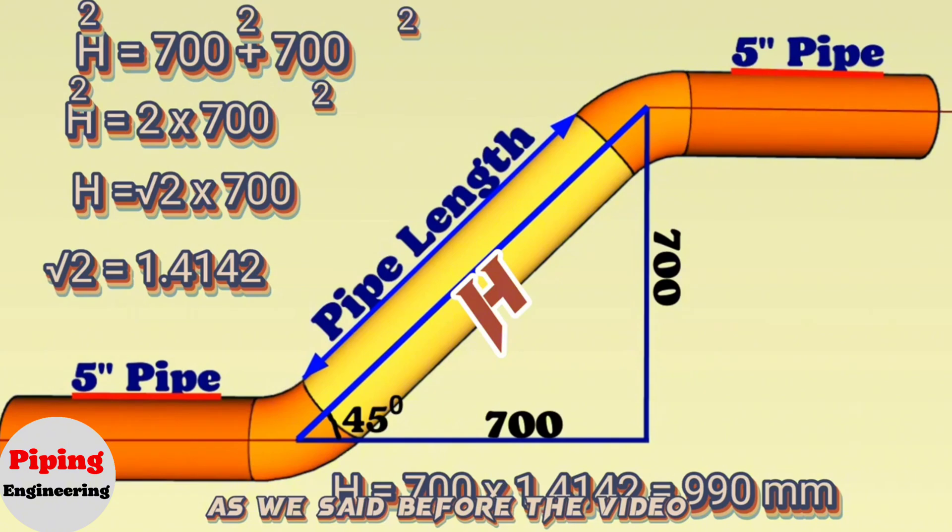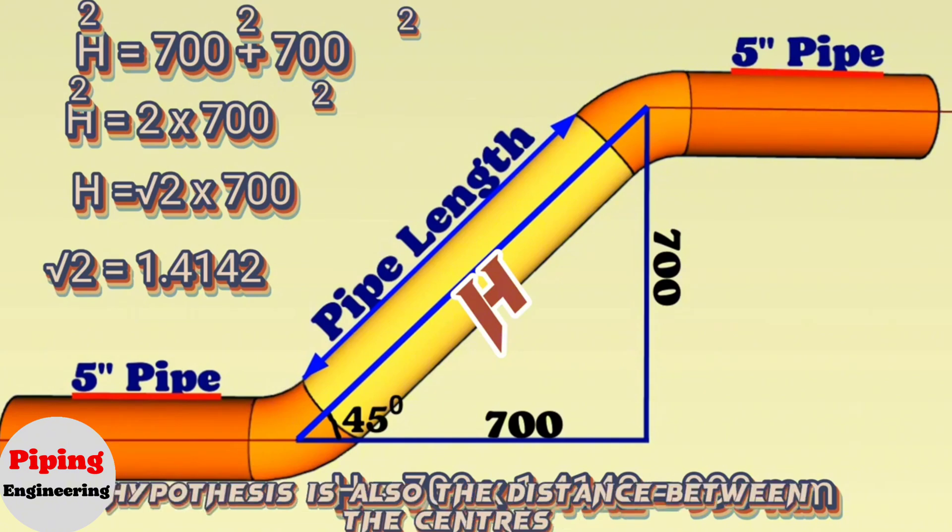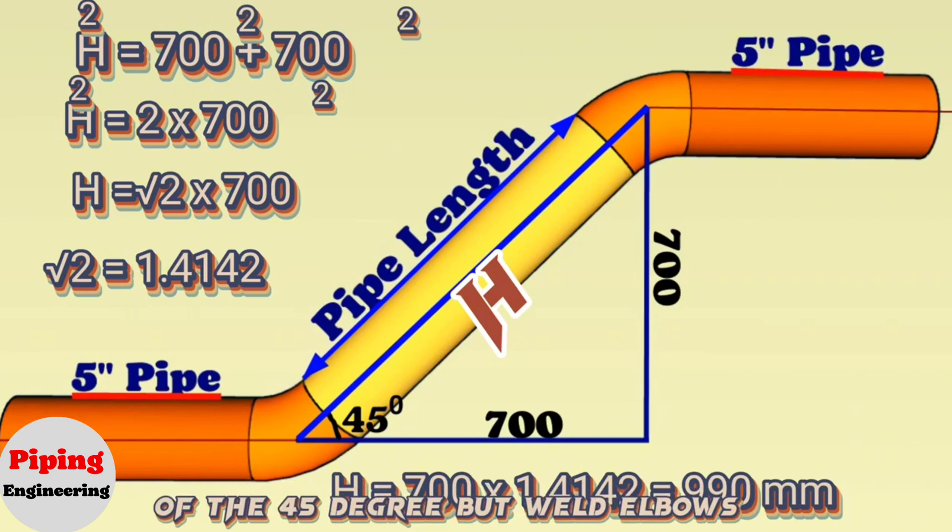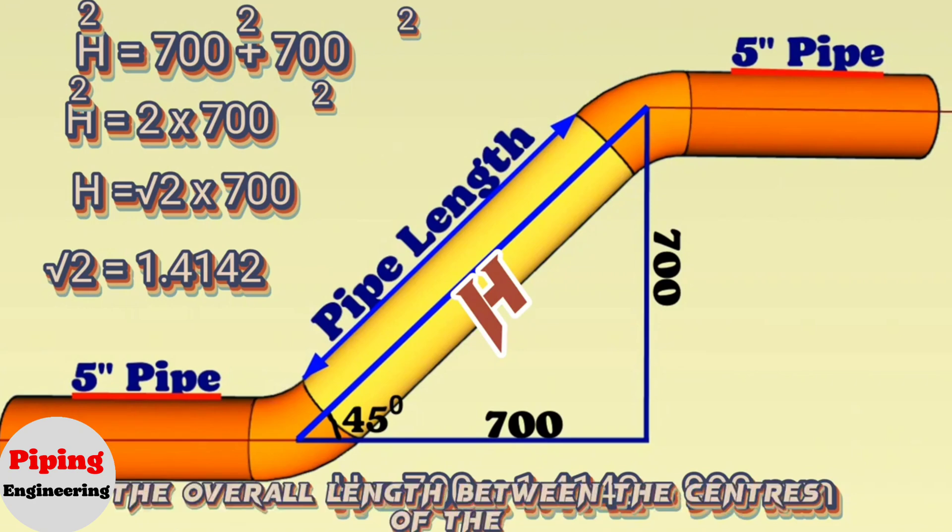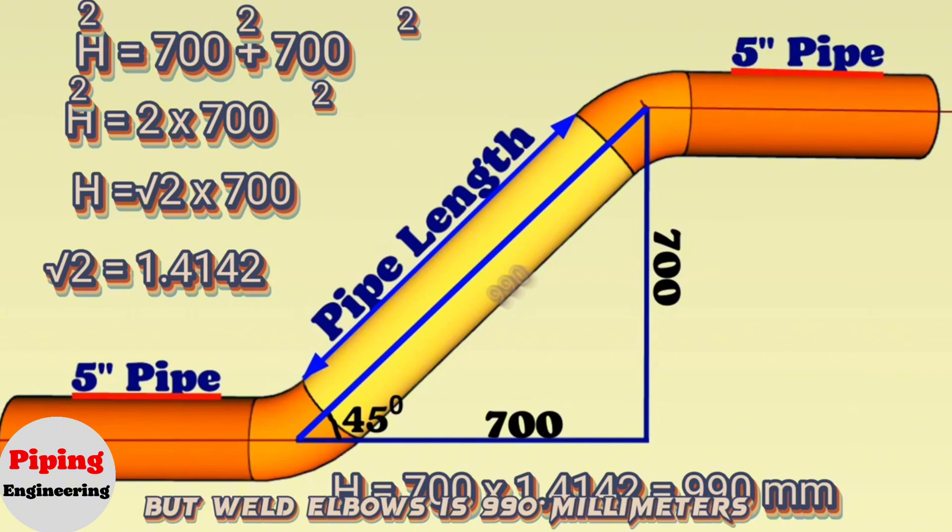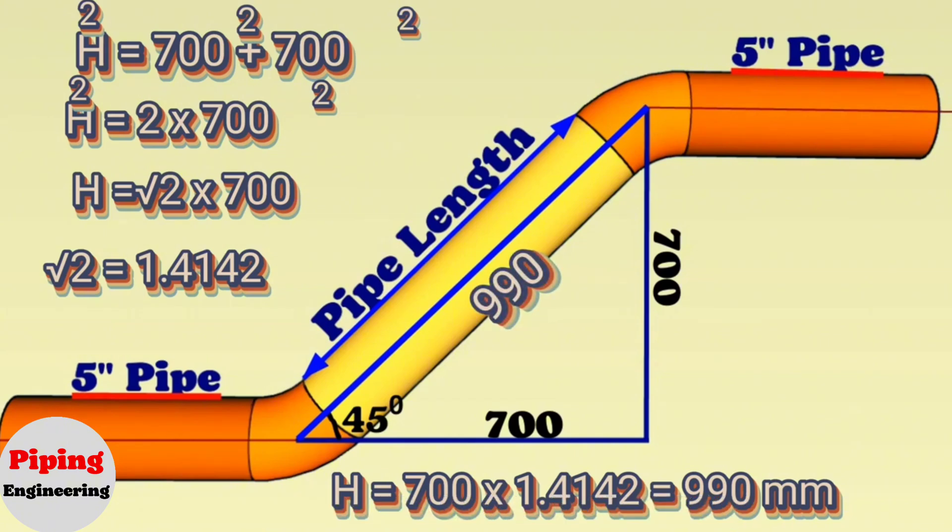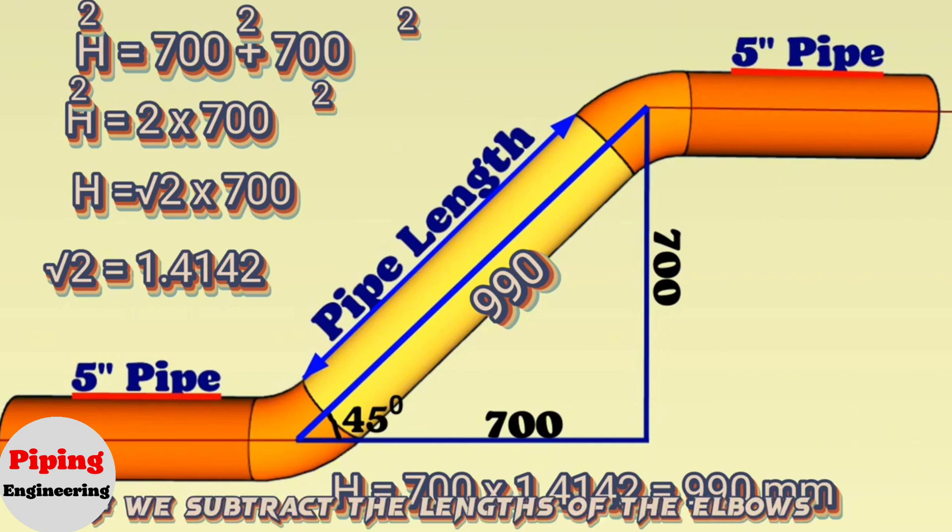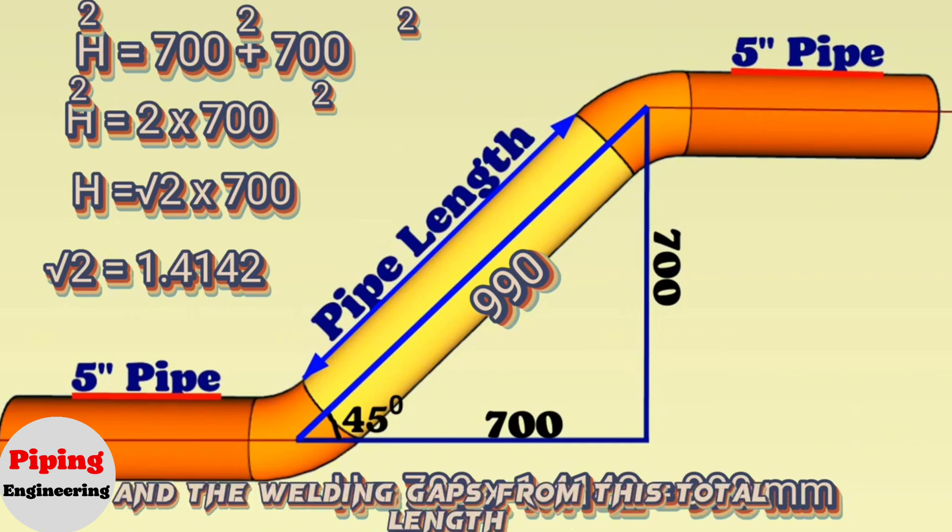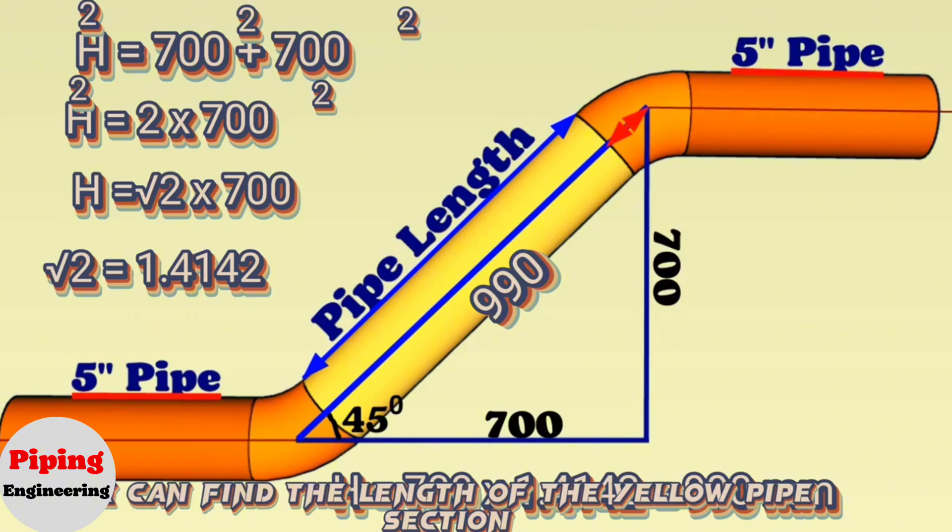As we said before, the length of the H-hypotenuse is also the distance between the centers of the 45-degree butt-weld elbows. So the overall length between the centers of the butt-weld elbows is 990 millimeters. If we subtract the lengths of the elbows and the welding gaps from this total length, we can find the length of the yellow pipe section.